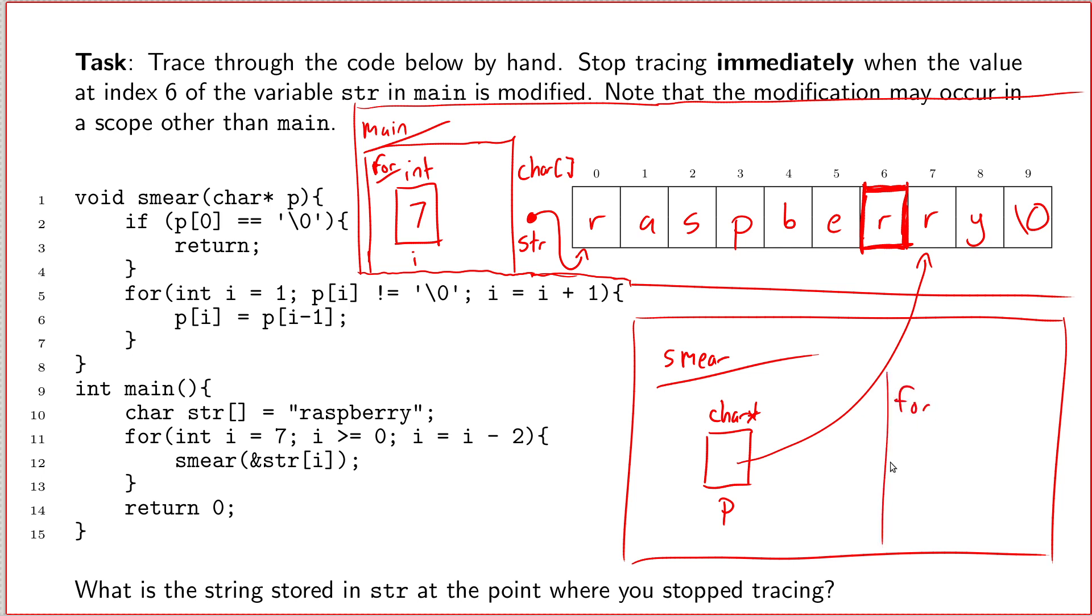So, we'll make our scoping box for the for loop in this function as well. There it is. And i starts at the value 1. All right. So, then I ask the question, because this loop condition is non-obvious, I should make sure I ask it at every iteration. Is p sub i equal to the null terminator? Okay. Well, follow the arrow from p. i is equal to 1. So, I follow the arrow from p. I walk one step ahead. That's the letter y. That is not equal to the null terminator. And so, I step into the loop. I actually execute the body of the loop.